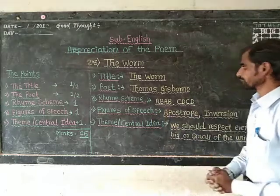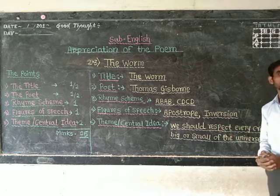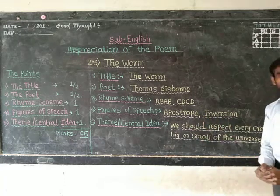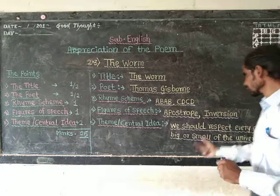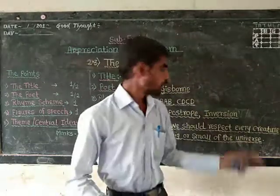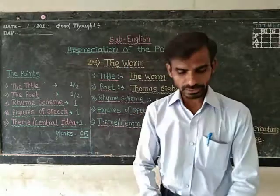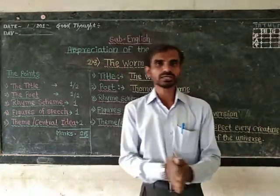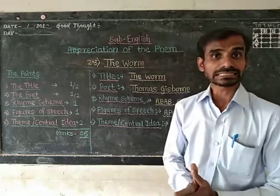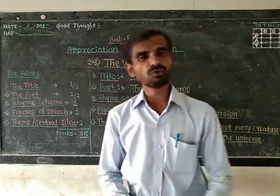The figures of speech are apostrophe and inversion. The last and important one is the central idea of the poem: we should respect every creature, whether it is big or small, of the universe. Title of the poem is The Worm.